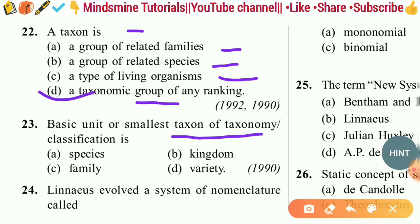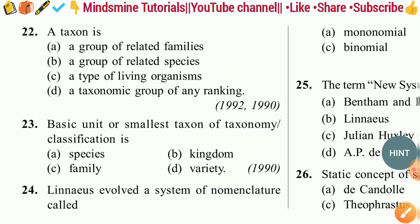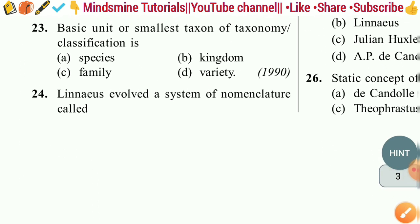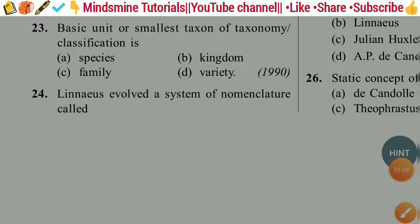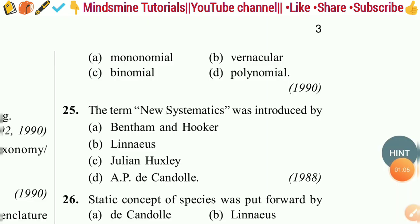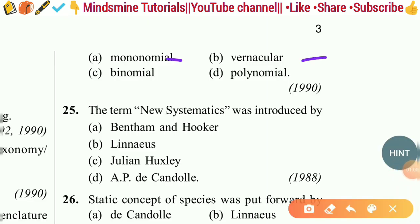Question twenty-three: The basic unit or smallest taxon of taxonomy and classification is — species, family, kingdom, or variety? The correct answer is option A — species. Question twenty-four: Linnaeus evolved a system of nomenclature called — monomial, vernacular, binomial, or polynomial? The correct answer is option C — binomial nomenclature.